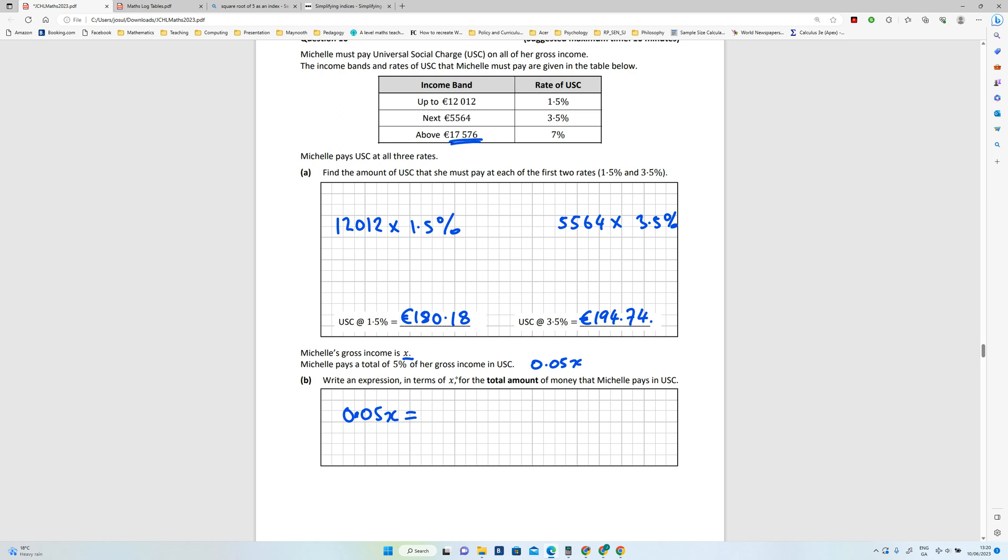So let's do that first. There's going to be a 0.07 multiplier on whatever amount of money she earns over this amount. So that's going to be the same as X minus 17,576. So we'll say X minus 17,576 in here, plus these two numbers have to get added in. So I'll write them here, plus 194.